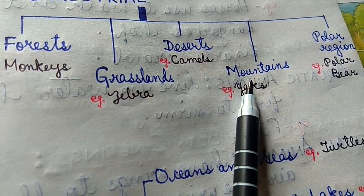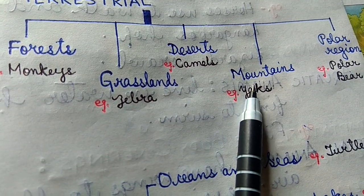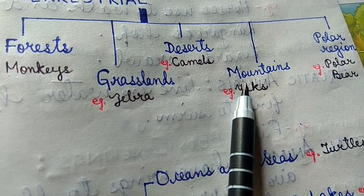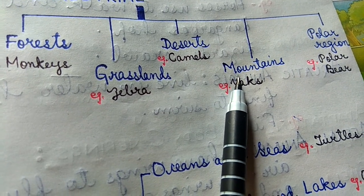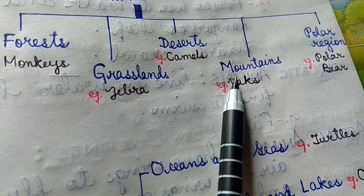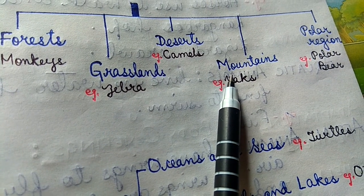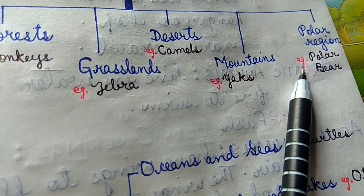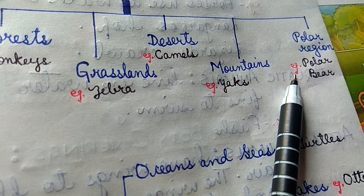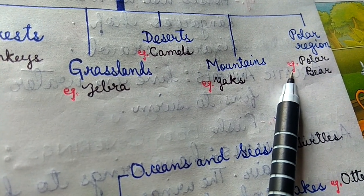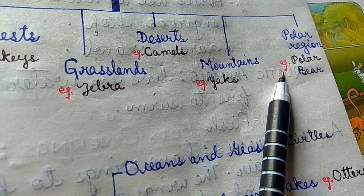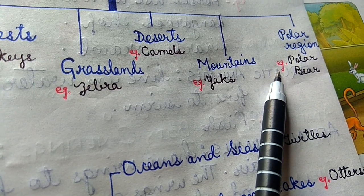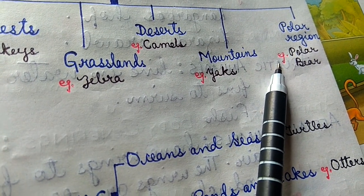Next, mountains. Mountains are large landforms which have cold temperature and usually have rough surfaces. Examples: mountain goats, yaks, etc. Next, the polar regions. These areas are covered with snow throughout the year. Examples: polar bears and penguins are found there.